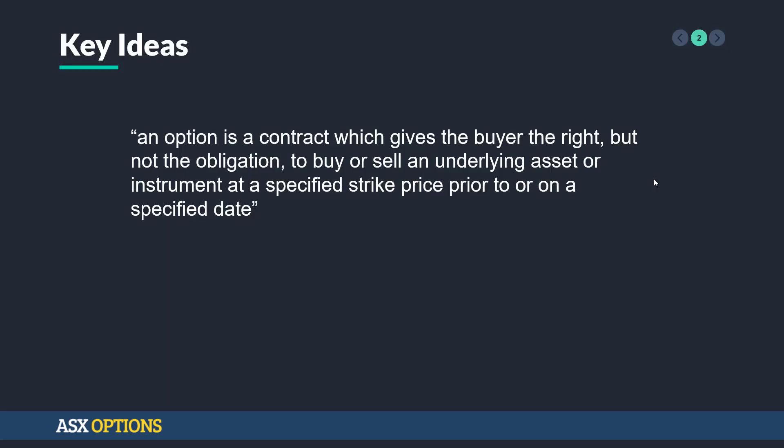The key idea is that an option is a contract which gives the buyer the right, but not the obligation, to buy or sell an underlying asset or instrument at a specified strike price prior to or on a specified date. That's the exact definition, so we're going to try and break that down a little bit. Essentially, it's an agreement to maybe buy or sell something at a given price at a specified time in the future. That's all it is — an agreement.